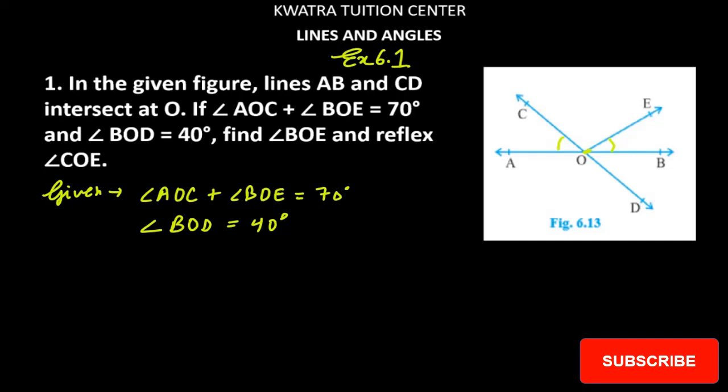First we will start with angle AOC and angle BOD. What is the relation? Angle AOC is the vertically opposite angle of angle BOD. Why? Because if it is 40, it is also 40. You can see that you have given CD line and AB line. Your intersecting lines are there. So this means we will start with proof.